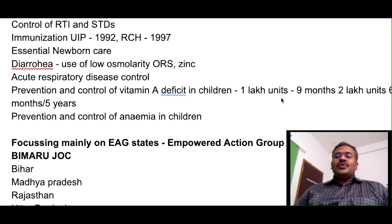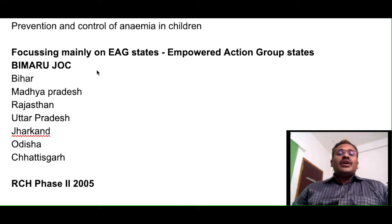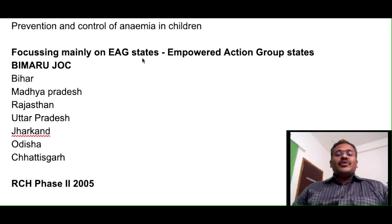The second component focuses mainly on EAG states. In RCH phase 1, the Empowered Action Group states were given more importance. These states follow the BIMA rule — meaning the population growth is going to increase majorly. That is, 53% of the population growth in our country will happen in these 7 states. That is why they are called EAG states — Empowered Action Group states.